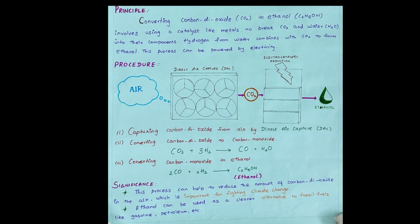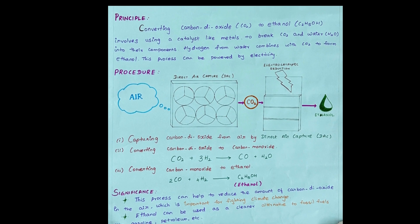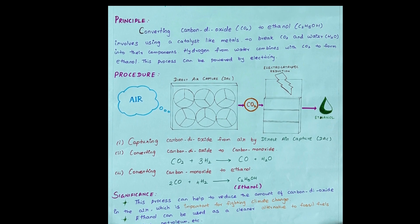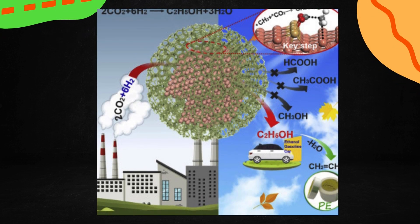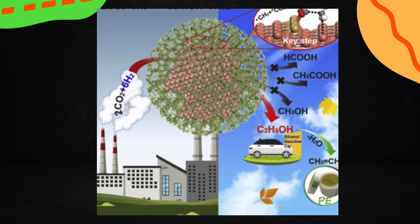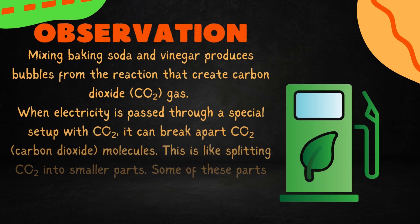Step 1: Carbon Dioxide to Carbon Monoxide. First, carbon dioxide reacts with hydrogen to form carbon monoxide and water in a process called carbon dioxide hydrogenation. Step 2: Carbon Monoxide to Ethanol. Then the carbon monoxide produced in the first step reacts with more hydrogen in a second reaction to form ethanol.